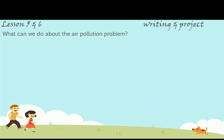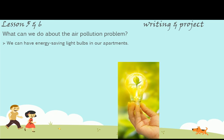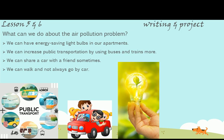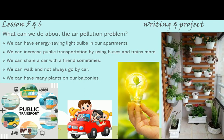Lessons 5 and 6: Writing and project. What can we do about the air pollution problem? We can have energy-saving light bulbs in our apartments. We can increase public transportation by using buses and trains more. We can share a car with a friend sometimes. We can walk and not always go by car. We can have many plants in our balconies.